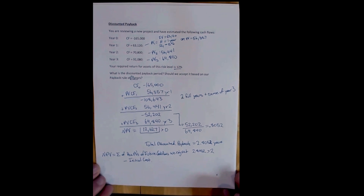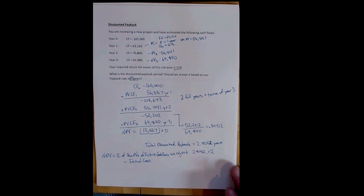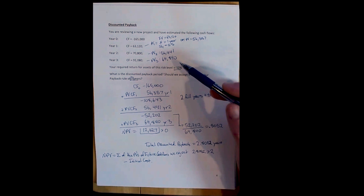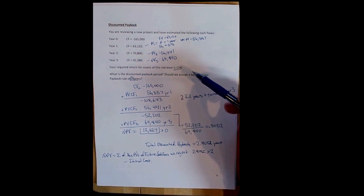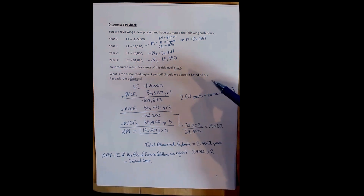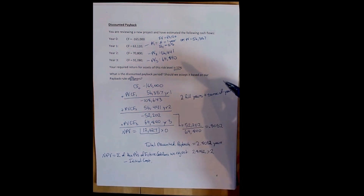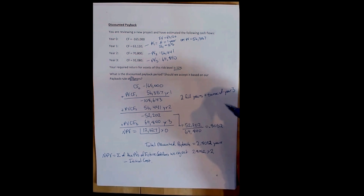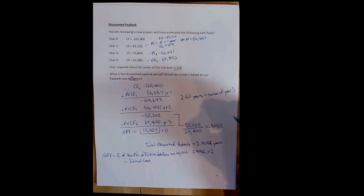This is the main problem with the discounted payback rule. It is much harder to compute than the normal payback because you have to calculate all the present values, make assumptions about risk, and think about how the project will change over time — all the same assumptions required for the NPV rule. But it also gets rid of all the benefits of the payback rule, which is that it's easy, doesn't require those assumptions, and can be done on the back of an envelope. We sort of fail to see the forest for the trees. For this reason, the discounted payback rule is not recommended, but it is something you may encounter in the future.